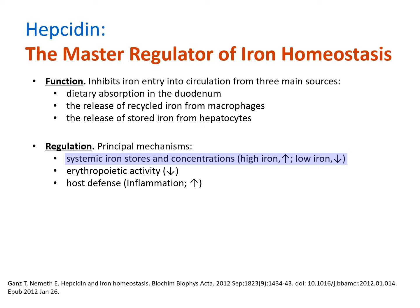In the opposite scenario, when plasma iron is low, hepcidin expression is suppressed, leading to an increase in iron entering circulation. In states of high erythropoietic demand, brought on by blood loss or hypoxia, hepcidin is down-regulated, allowing iron to flow to the bone marrow compartment for incorporation into new red blood cells.